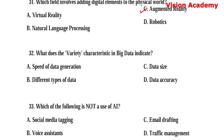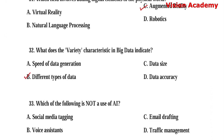Question number 32. What does the variety characteristic in big data indicate? Option A: Speed of data generation. Option B: Different types of data. Option C: Data size. Option D: Data accuracy. Here, option B, different types of data, is the right answer.